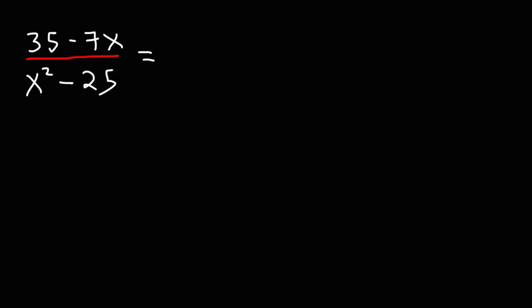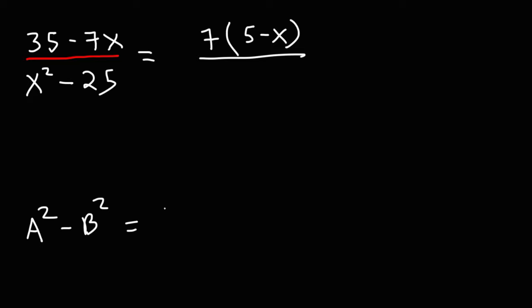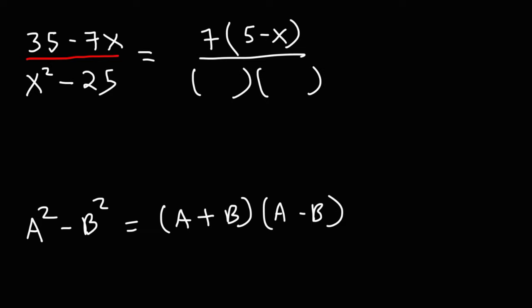In the numerator, we can factor out a 7, because 35 and 7x are both divisible by 7. If we divide 35 by 7, we're going to get 5. And if we divide negative 7x by 7, we're going to get negative x. Now, x squared minus 25 — what we have there is a difference of perfect squares. When you have the expression a squared minus b squared, you can factor it as a plus b times a minus b. The square root of x squared is x, the square root of 25 is 5, so it's going to be x plus 5 and x minus 5.